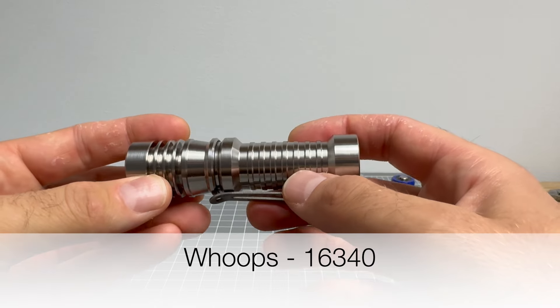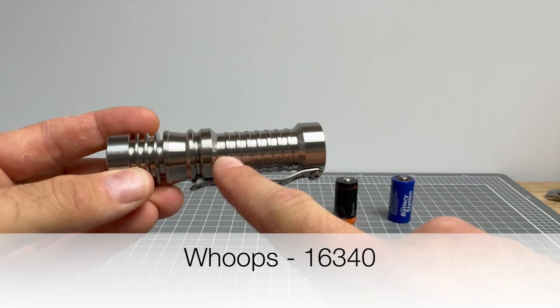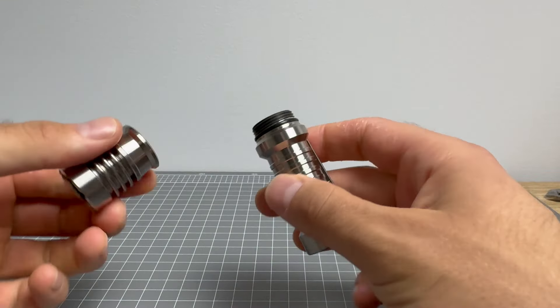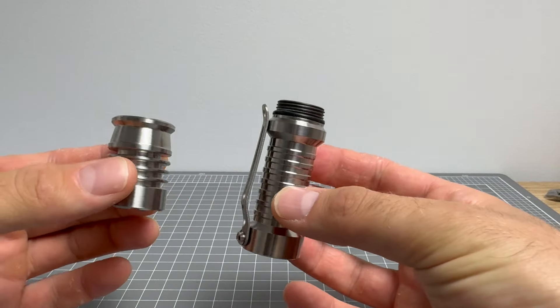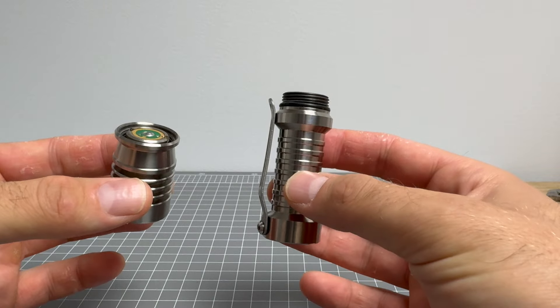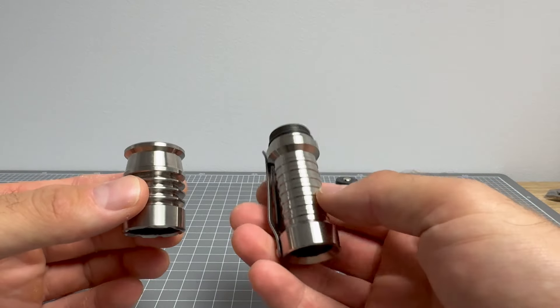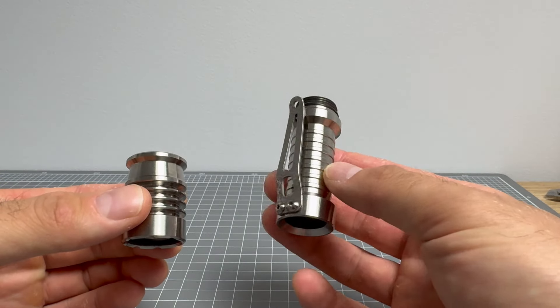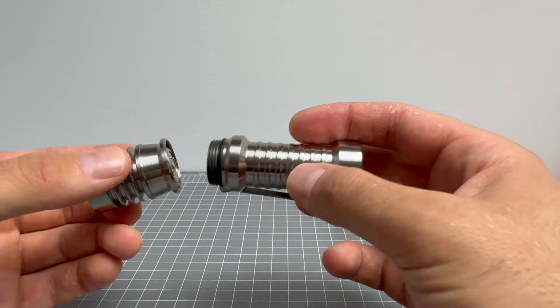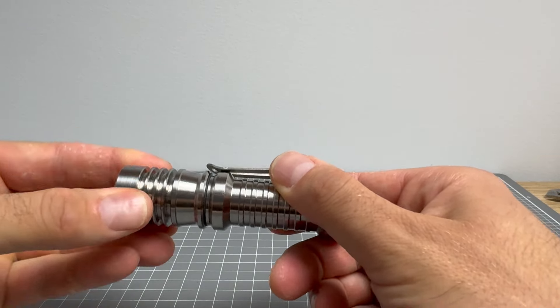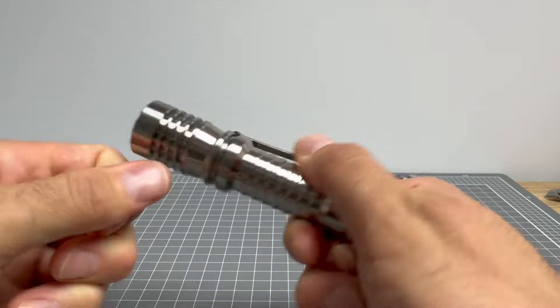So we do have the 16-650 or CR123 body, okay? Now this light also comes in a 14-500 style body, but this one is the CR123. I actually prefer the CR123 body. It is, there's more to hold on to, but it's also more versatile in terms of your battery options, which I will go over.